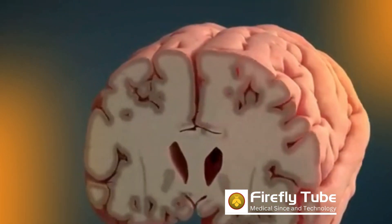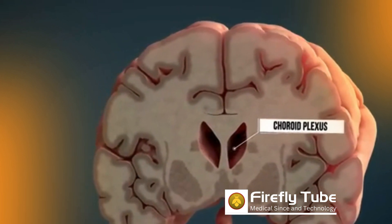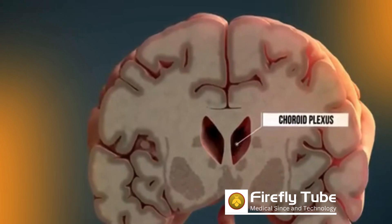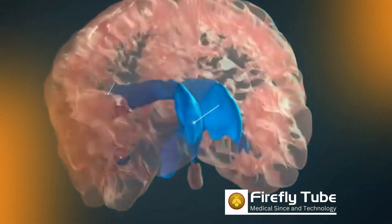Around 500 milliliters of cerebrospinal fluid is produced by cells in the brain per day. The cerebrospinal fluid circulates not only in the subarachnoid space, but also in cavities known as ventricles.